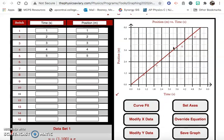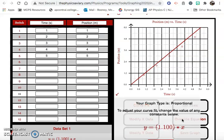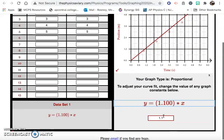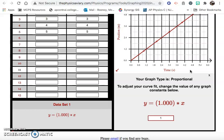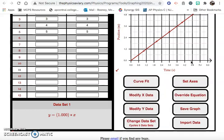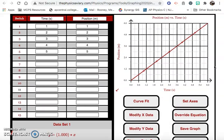And so now this graph will be ready to screenshot. I'm going to undo that override because this is linear, so it should just be one for the slope. And so this is ready for you to screenshot and use.